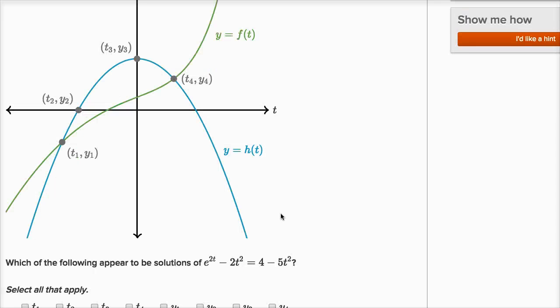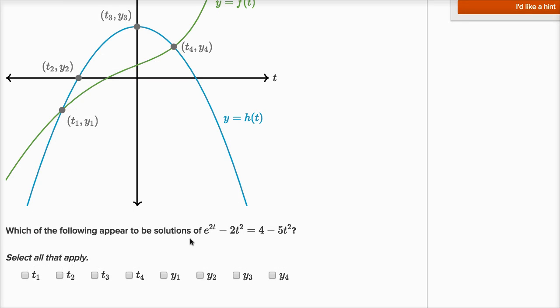So another way of thinking about it, select all of the t's for which f of t is equal to h of t. So all of the t's where f of t is equal to h of t, well that's going to happen at the points of intersection.